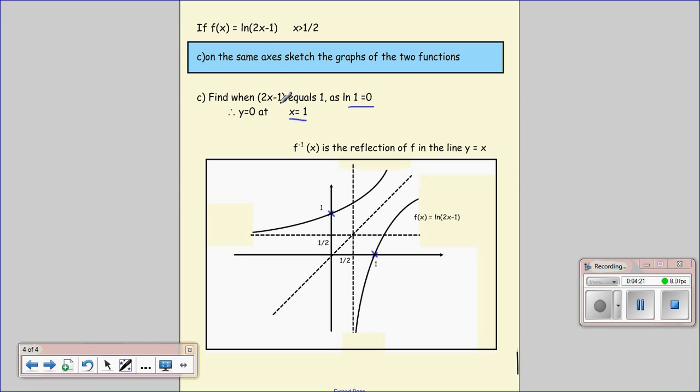And that equals 1 when x equals 1. So now we can draw this in. We've got that point and that point. And then this is the key thing. The inverse of a function is always the reflection of the function in the line y equals x. So here's the line y equals x here.